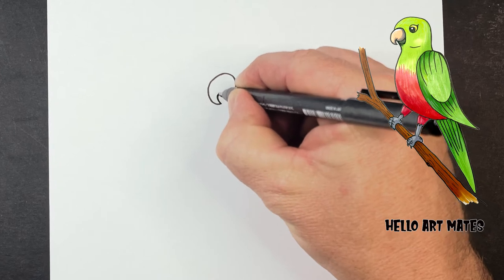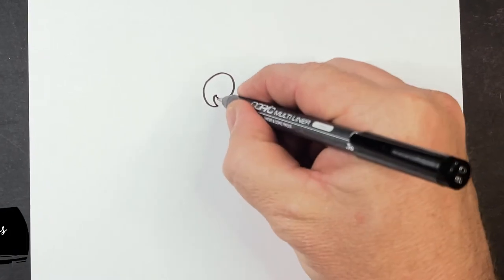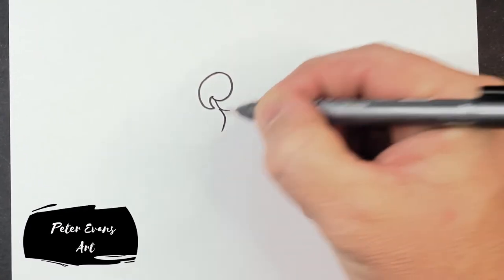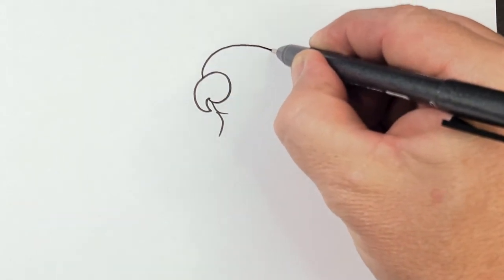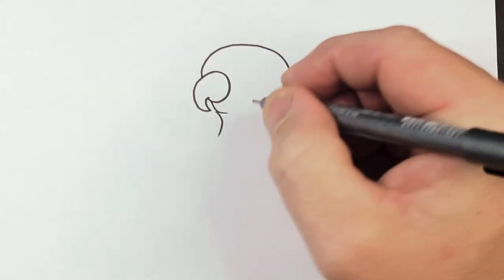Now I'm going to simplify the king parrot down to make it a little bit more cartoonish. I'm also using a 0.5 copic multiliner to show you how to draw it. You could use an outliner or a pencil, it's up to you.